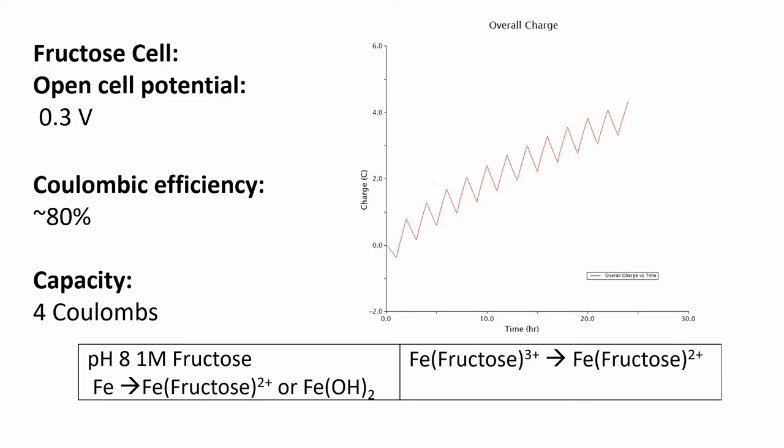So again you get this sawtooth slowly climbing indicating we're not getting all the Coulombs out that we put in. But it's still better, it's more like 80 percent instead of 50 percent. But the capacity is only about four Coulombs. Fructose is not ideal. And the open cell potential is much lower, almost half.